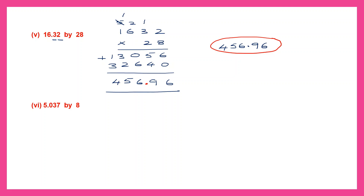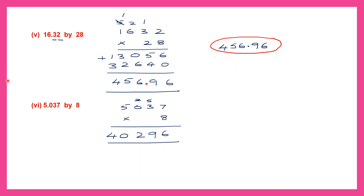Next question: ignoring the point it'll be 5037 multiplied by 8. 8 sevens are 56 carry 5, 8 threes are 24 plus 5 is 29 carry 2, 8 zeros are 0 bring the 2 down, 8 fives are 40. So we've got 40,296. But let's go back to the question and check the number of decimal places — 1, 2, 3. So our answer also should have three decimal places. The point comes here giving 40.296.